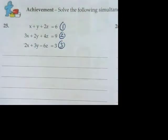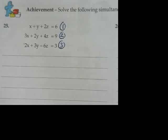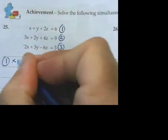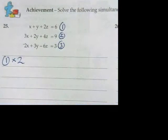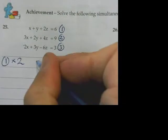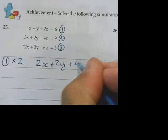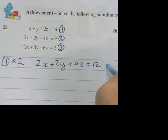And I'm going to deliberately get rid of z, because it just seems to be a bit more obvious to me to do that. So the way I'm going to do that is I'm going to do number one times by two. And that's going to give me 2x plus 2y plus 4z equals 12. And I'm now going to call that equation number four.